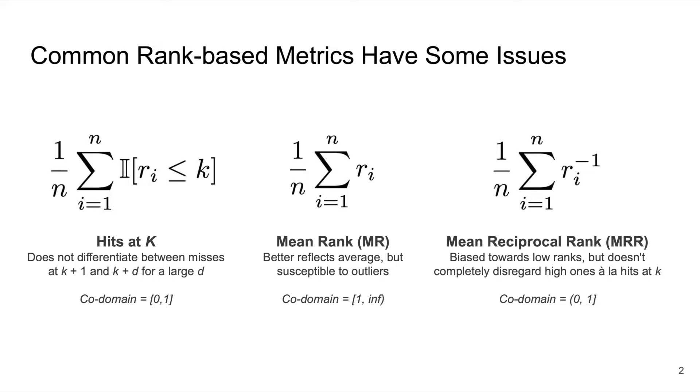And finally, the mean reciprocal rank applies the inverse to each rank before taking the average. It's biased more towards smaller ranks and doesn't completely regard the bigger ones like hits at k.